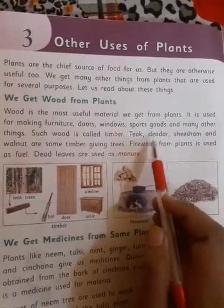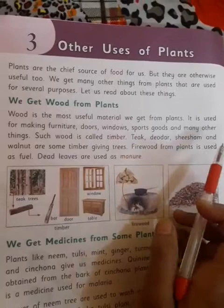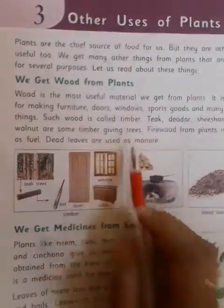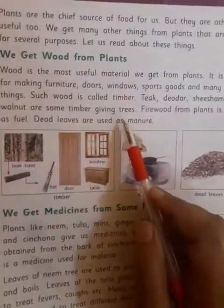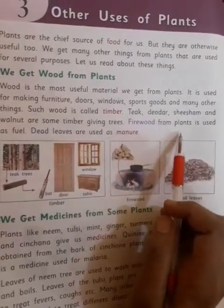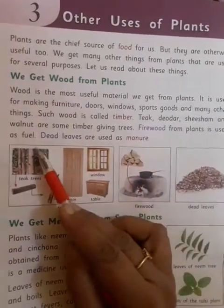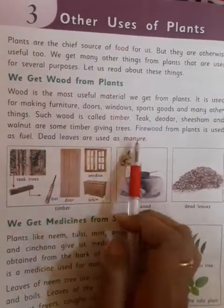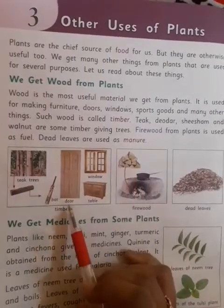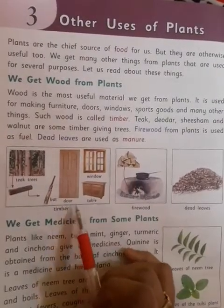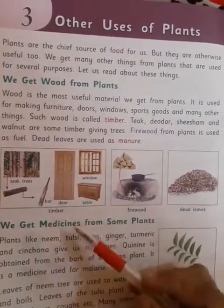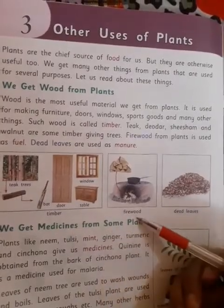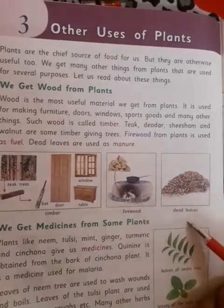Trees like teak, deodar, shisham, and walnut are some timber-giving trees. Firewood from plants is used as fuel, and dead leaves are used as manure.